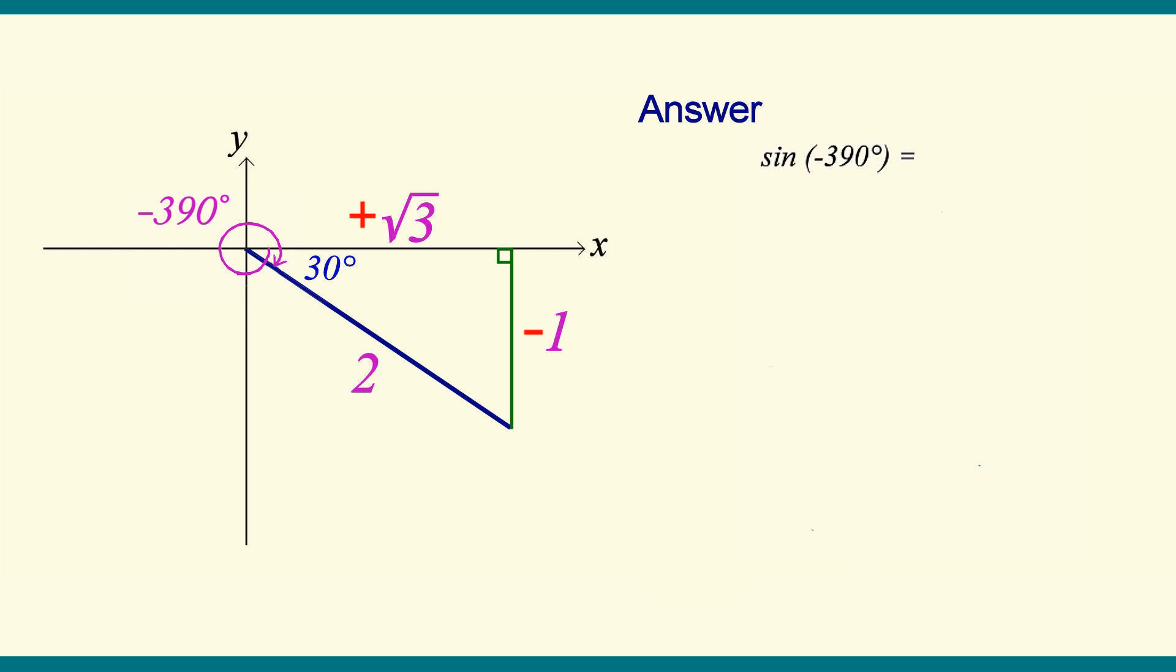Sine is opposite over hypotenuse, so we get negative 1 over 2. Cosine is adjacent over hypotenuse. That's square root 3 over 2.